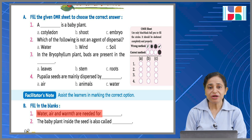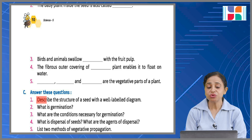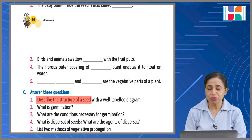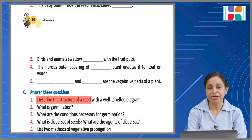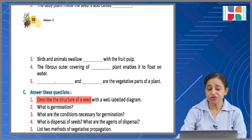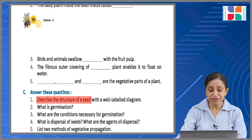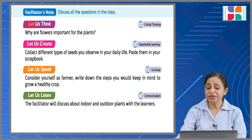In the next section, you have to write one, two, or three lines for a complete answer. For example, the first question asks you to describe the structure of a seed — you need to draw a diagram of a seed showing its parts as given in the chapter, and label it. Likewise, answer all questions: describe conditions necessary for germination, explain how seed dispersal happens, and what the methods of vegetative propagation are.